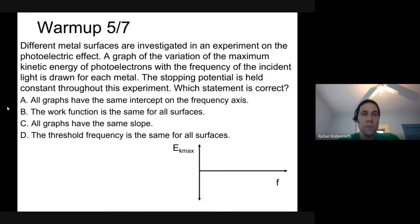Okay, so here is the one question. It says different metal surfaces are investigated in an experiment on the photoelectric effect. A graph of the variation of the maximum kinetic energy of photoelectrons with the frequency of the incident light is drawn for each metal. The stopping potential is held constant throughout this experiment. Which statement is correct?